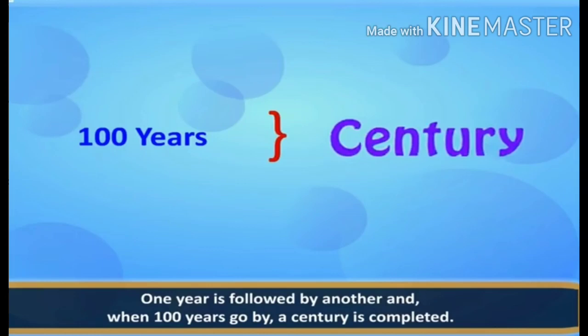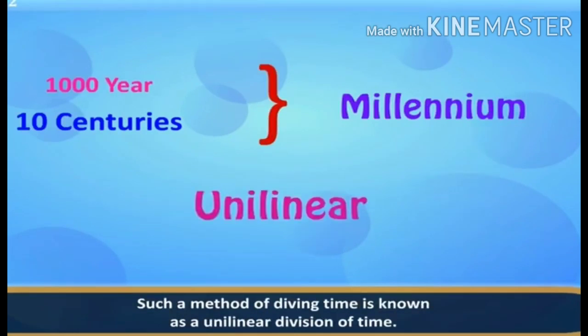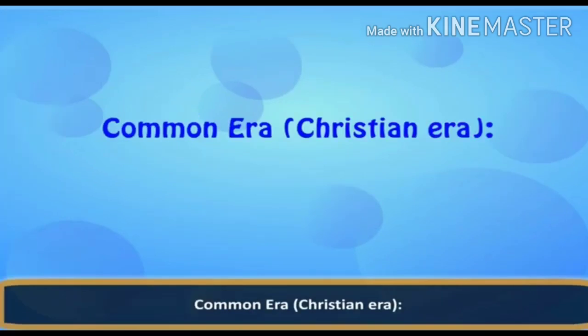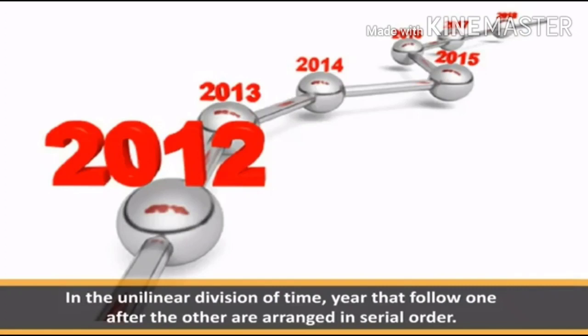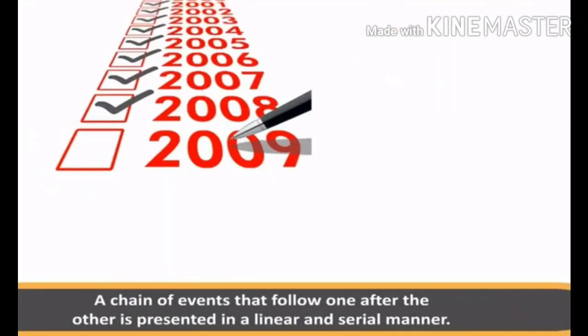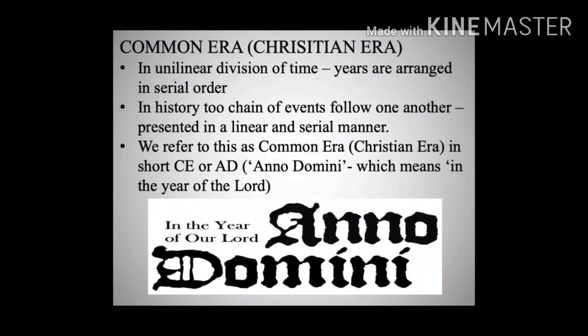Such a method of dividing time is known as unilinear division of time. In the common era or the Christian era, in the unilinear division of time, years follow one after the other and are arranged in a serial order. In history books, we also have a chain of events that follow one after the other and are presented in a linear or serial manner. For this, we usually refer to the common era or Christian era.